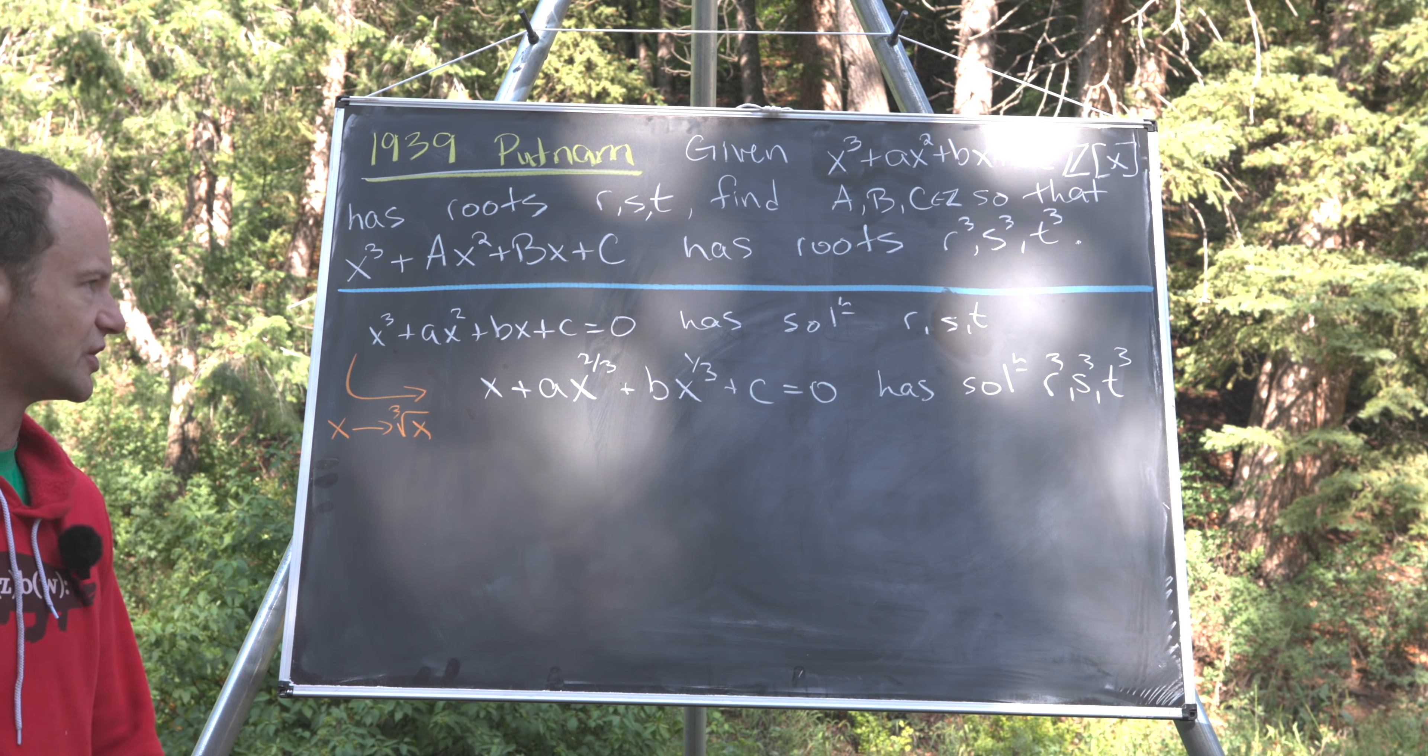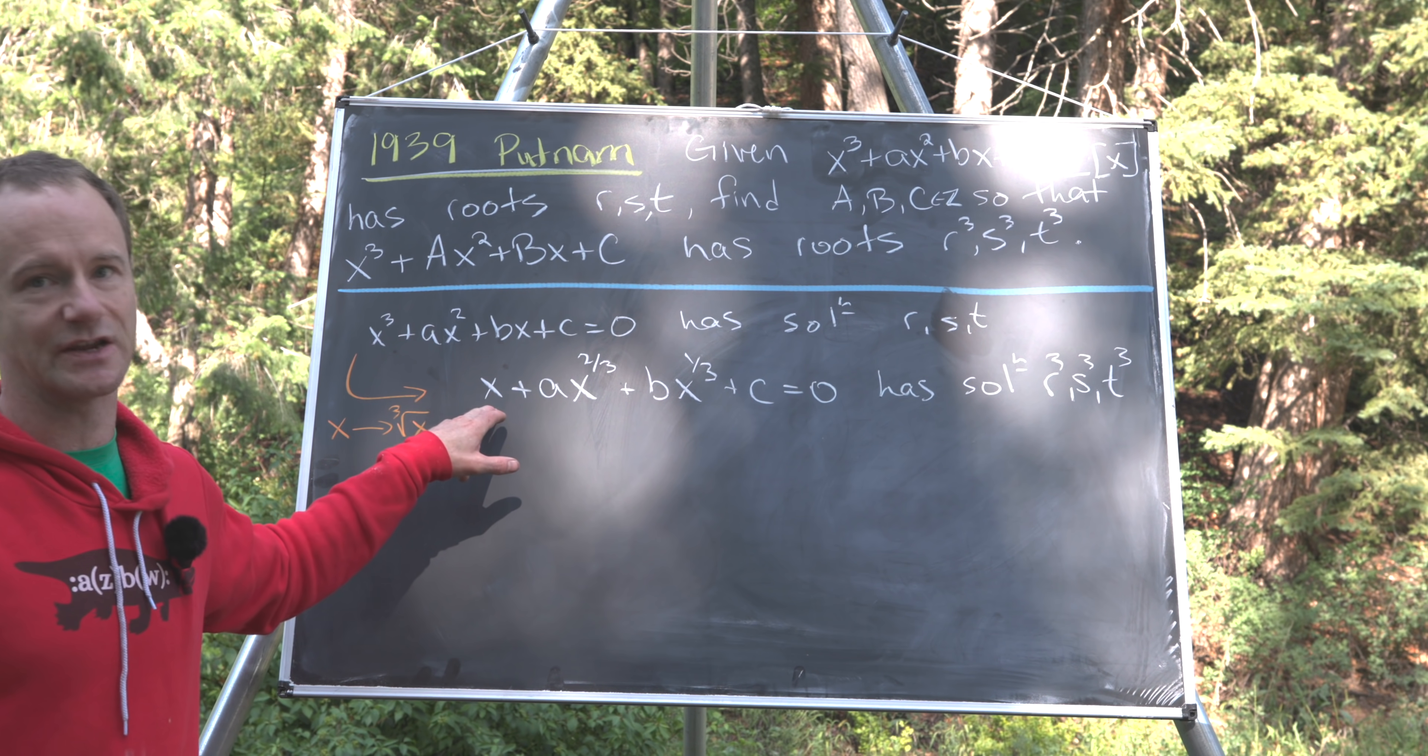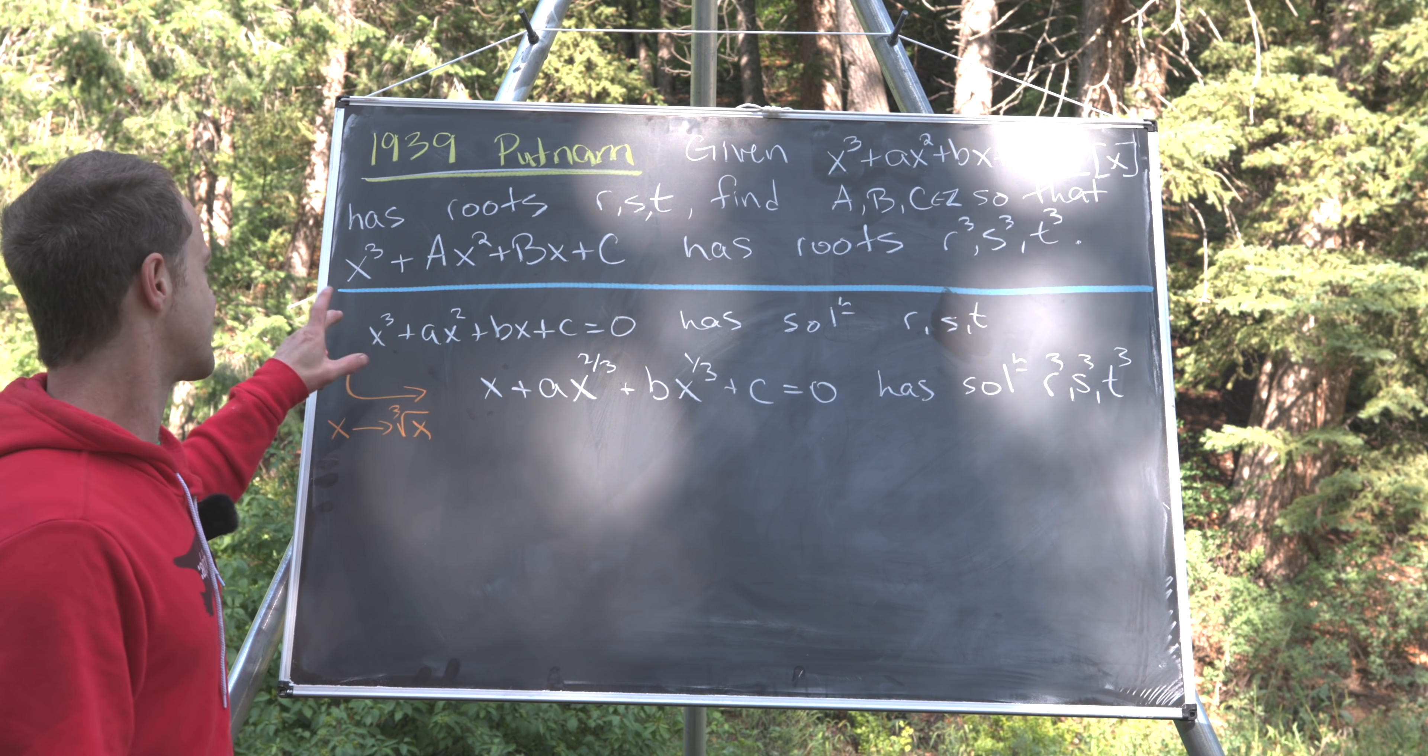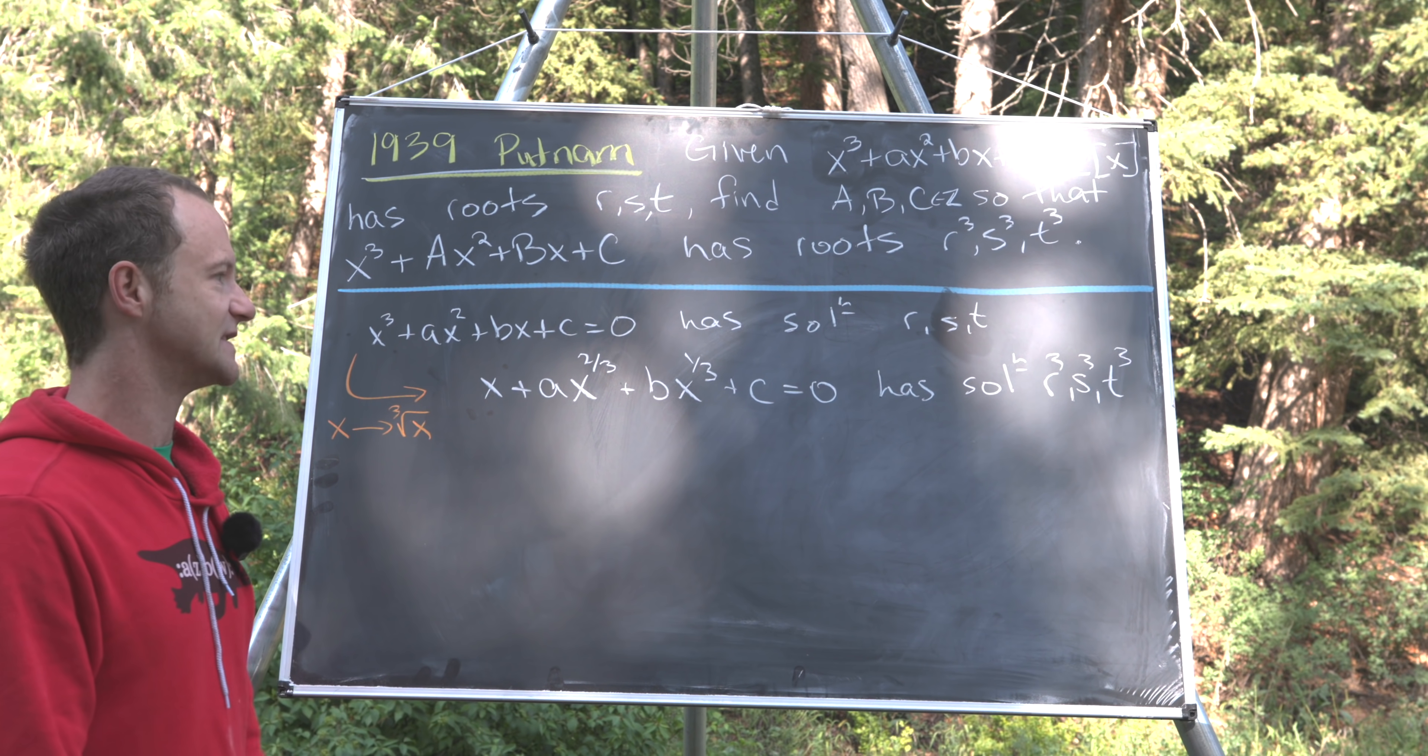And how do we know it's r³, s³, and t³? If we plug r³, s³, or t³ into the second equation, it will collapse to the first equation where r, s, and t have been plugged in. So that means it has been satisfied.